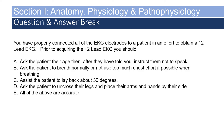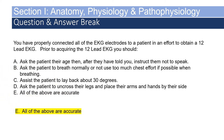You have properly connected all EKG electrodes to a patient. Prior to acquiring the 12-lead EKG, you should: A) ask the patient their age then instruct them not to speak, B) ask the patient to breathe normally or not to use too much chest effort, C) assist the patient to lay back about 30 degrees, D) ask the patient to uncross their legs and place their arms and hands by their side, or E) all of the above. The answer is E — all of the above are accurate. Some monitors require you to input the patient's age and sex into the monitor.